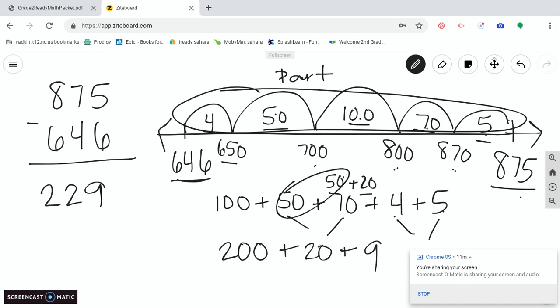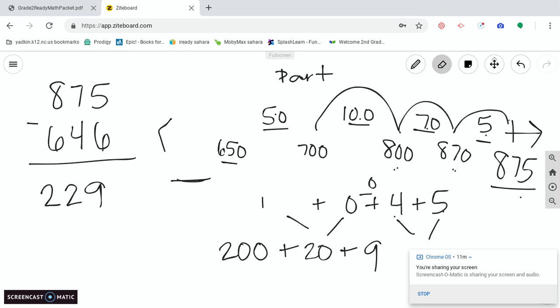So we can start with the small number, add up to the bigger number. Your answer is in the jumps. Be really careful putting your jumps together.